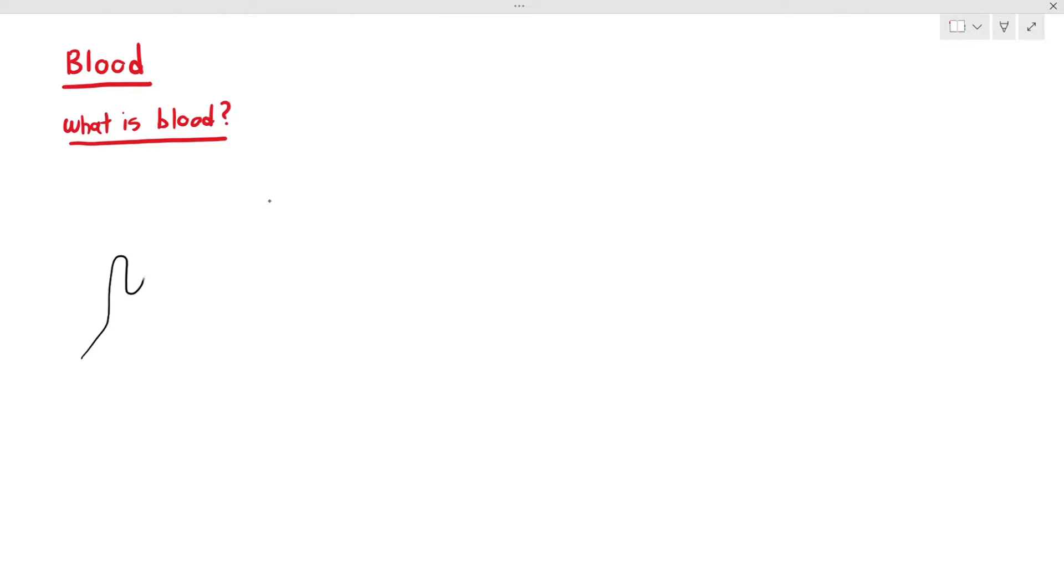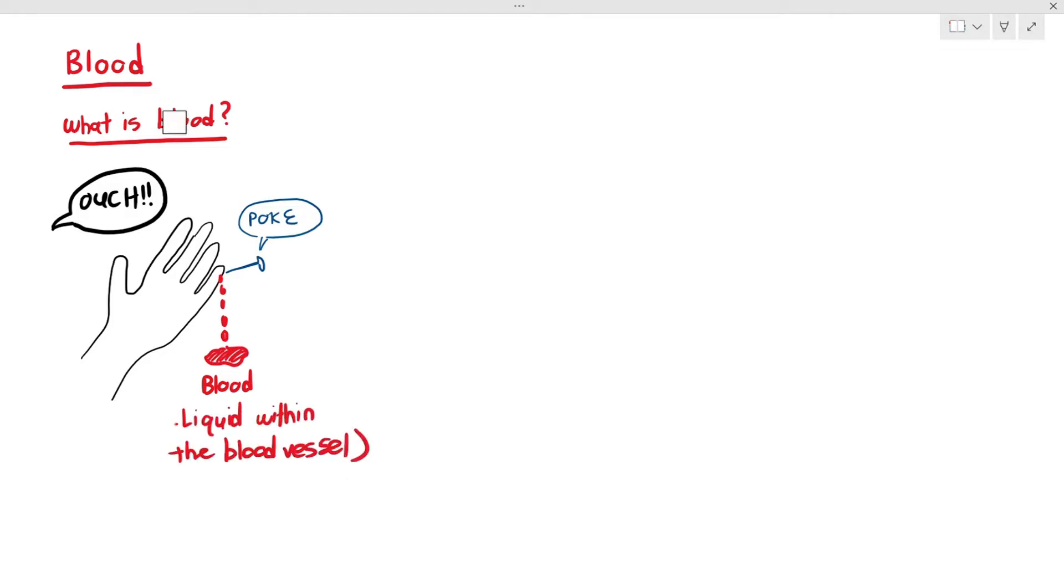So, for example, if I were to accidentally or deliberately poke myself, I don't know what you're into, blood, you will start bleeding, hopefully not for a long time, the bleeding will stop due to blood clotting, and this reddish liquid comes out from your body, and this liquid is known as blood. But the question is,